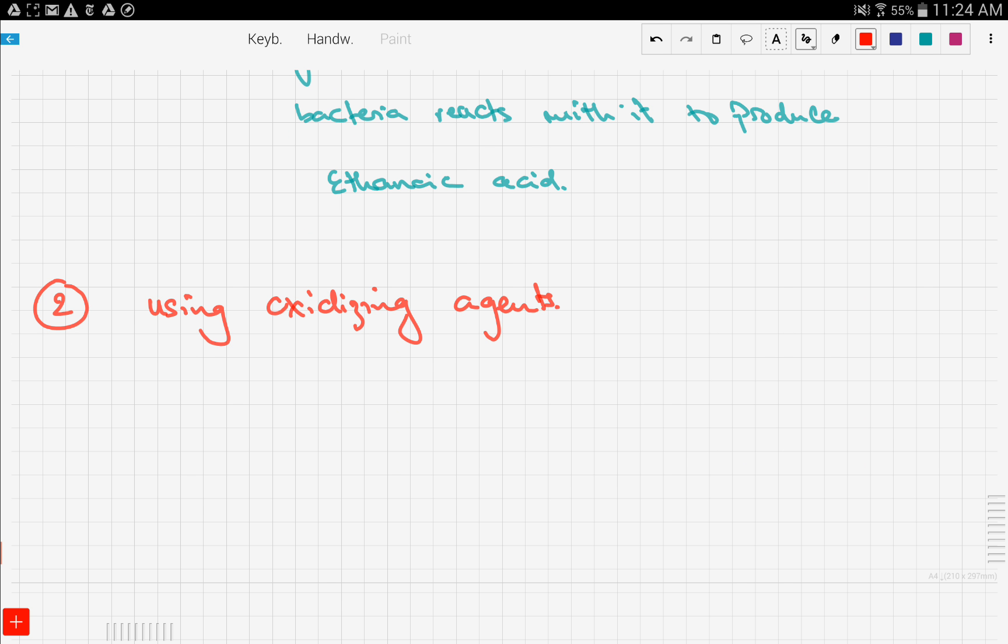The presence of this reagent oxidizes the alcohol, producing ethanoic acid. Let's see this using a reaction. We have ethanol again: C2H5OH. The ethanol gets oxidized using potassium manganate, and this produces ethanoic acid plus water.